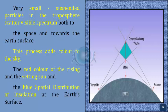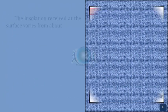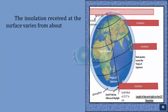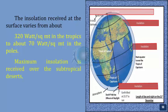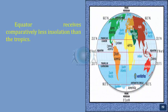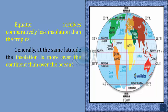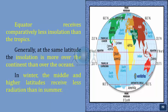Spatial distribution of insolation at the Earth's surface. The insolation received at the surface varies from about 320 watts per square meter in the tropics to about 70 watts per square meter at the poles. Maximum insolation is received over the subtropical deserts, where cloudiness is the least. The equator receives comparatively less insolation than the tropics. Generally, at the same latitude, insolation is more over the continent than over the oceans. In winter, the middle and higher latitudes receive less radiation than in summer.